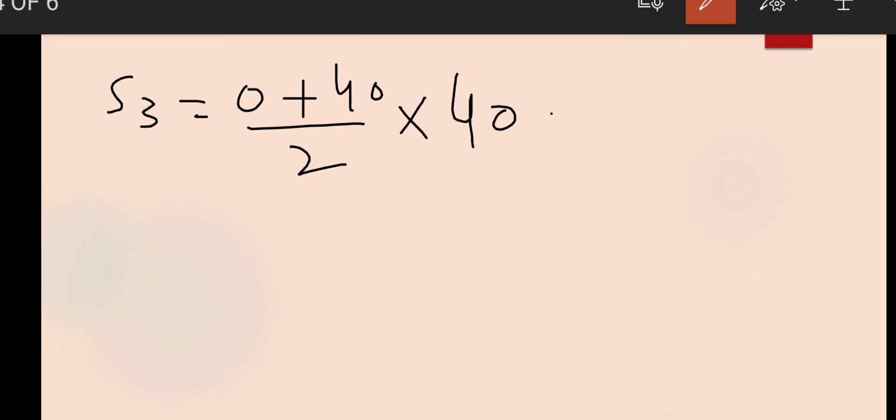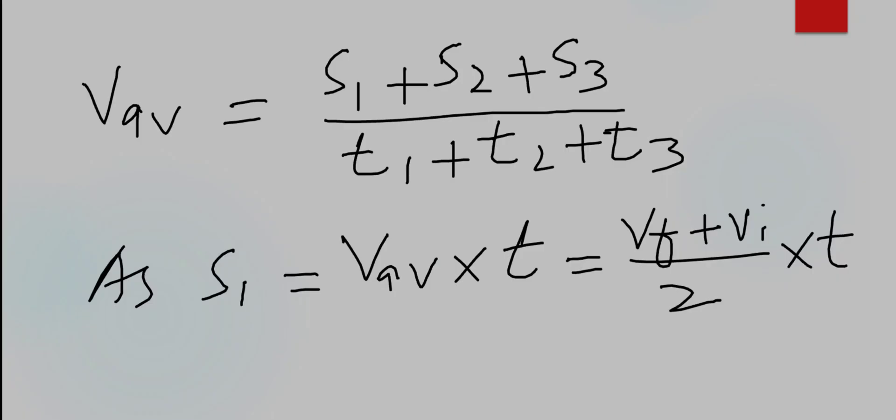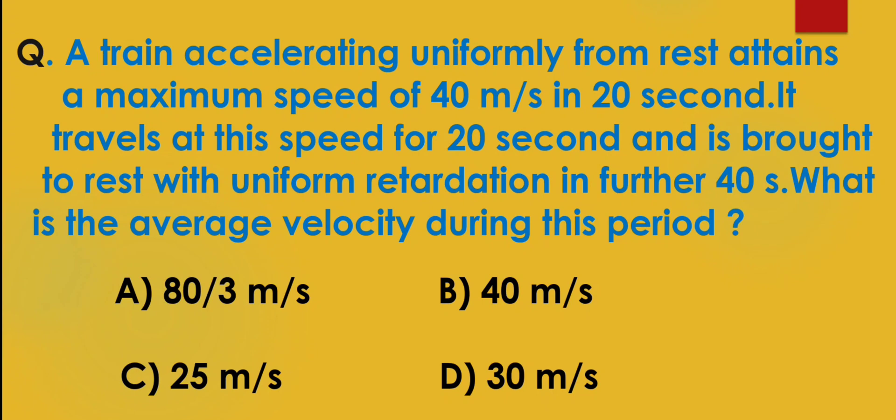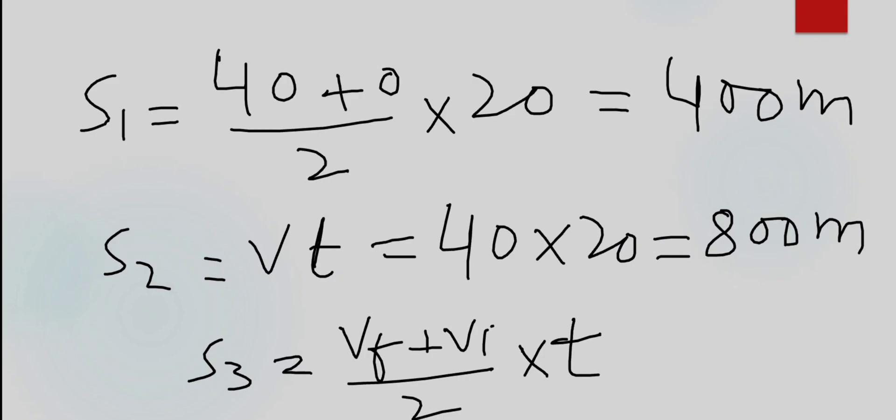So S3 will be equal to 40 into 40 divided by 2, so 2 ka 2 per 1 time or 20 times 40. So 20 into 40, S3 हमें obtained होगा that is 800 meter. S1, S2 और S3 हमें obtained हो गए और T1, T2 और T3 हमें obtained है. T1 है 20 seconds, T2 भी 20 seconds है और T3 जो है वो 40 seconds है. और S1 जो है 400, S2 800 और S3 जो है वो भी 800 meters है.